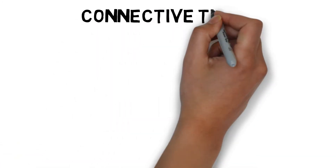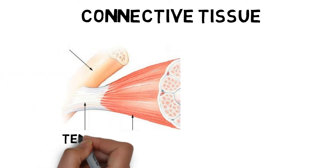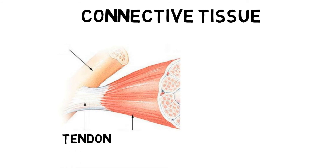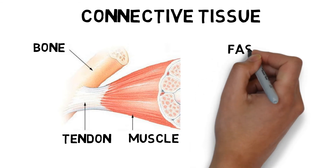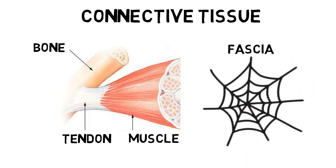Connective tissues allow muscles to interact with the rest of the body. Muscles attach to bones via tendons to provide an anchor for muscles to produce force. Fascia are large areas of dense, thin fibrous tissue that surround a muscle or organ — a bit like a giant spider's web.